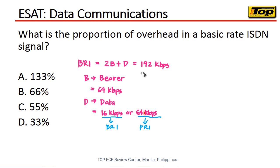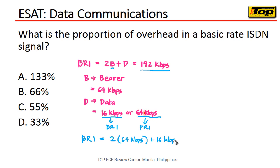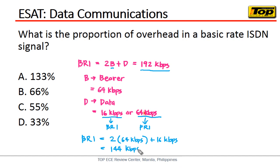So the question is: is 192 kbps really the bit rate of BRI? Let's find out. How do we compute that? BRI equals 2B, and B is 64 kbps, plus D, which for BRI is 16 kbps. This gives us a calculated value of 144 kbps. So it turns out it's not 192 — it's 144.